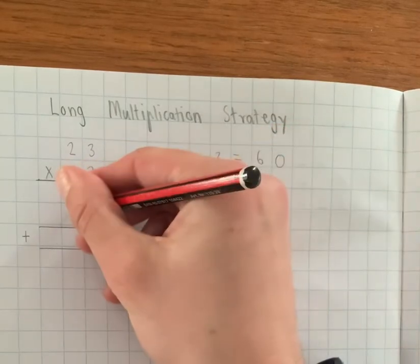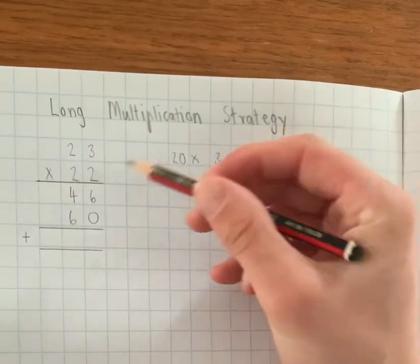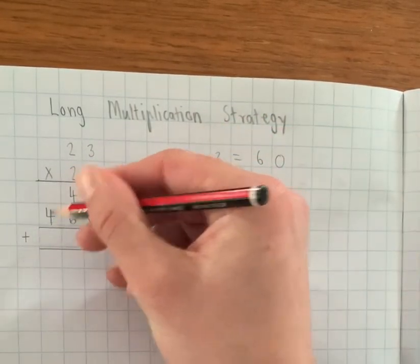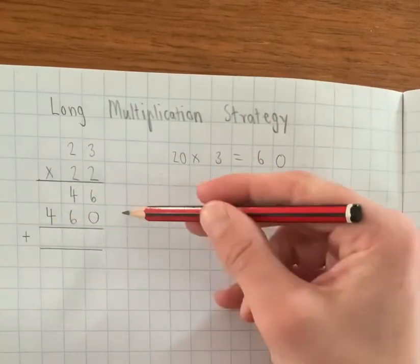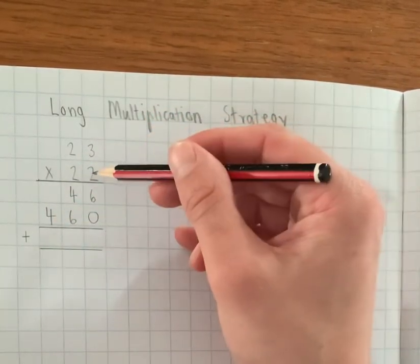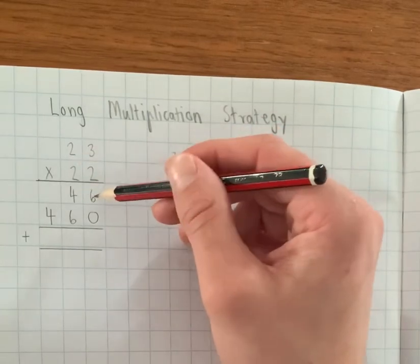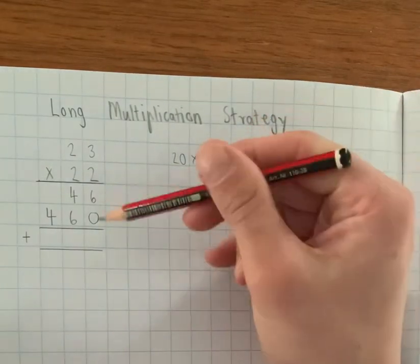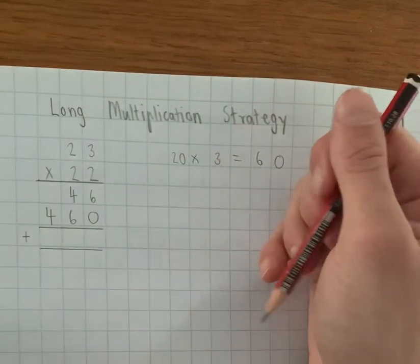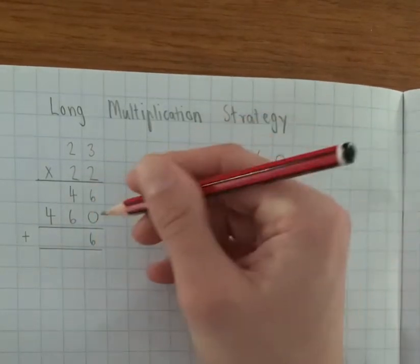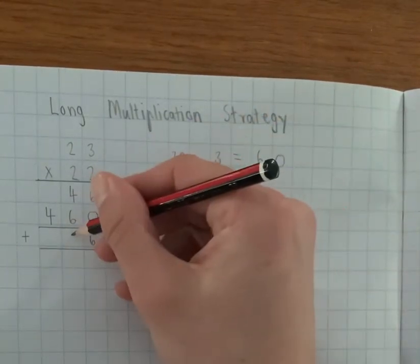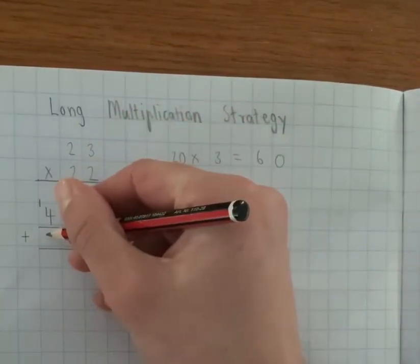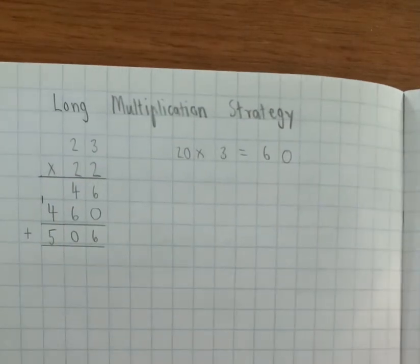So 2 times 3 is 60. Now we're doing 20 times 20 which is 400, so I just have to put the 4 there. Okay, so we have 460. So 20 times 23 is 460, and 2 times 23 is 46. Now what we do is we add this number and that number. So 6 and 0, and this is very similar to vertical addition. 6 and 0 is 6, 4 and 6 make 10. Put the 0 there and I carry the 1. Okay, and then we have 1 plus 4 is 5. So our answer is 506.